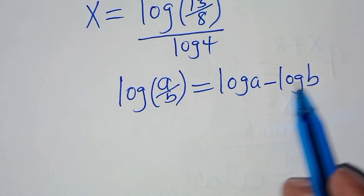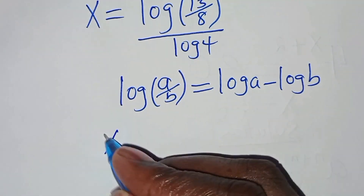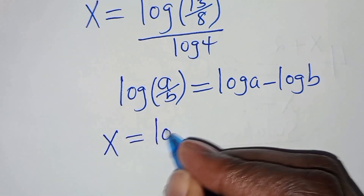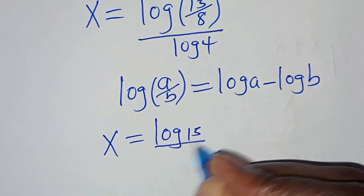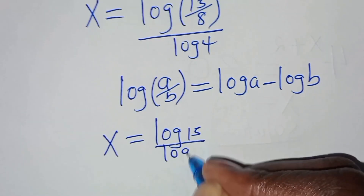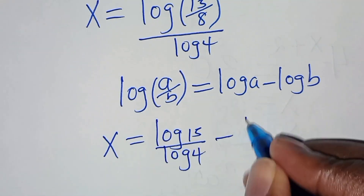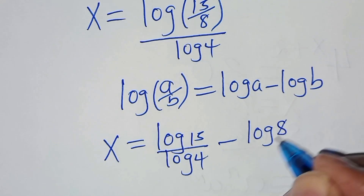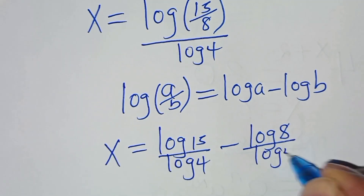Applying this property, the value of x will be equal to log 15 divided by log 4, subtract log 8 divided by log 4.